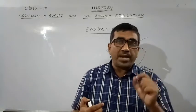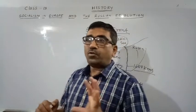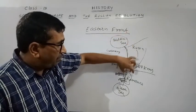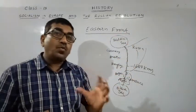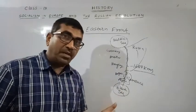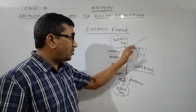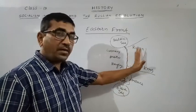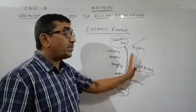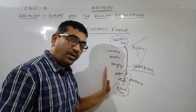The Eastern Front was 1,600 kilometers long. Trenches were not easily available as much of the land was marshy. Russia and Romania — the Allied side — were defeated on the Eastern Front, while the Central Powers were the winners there.